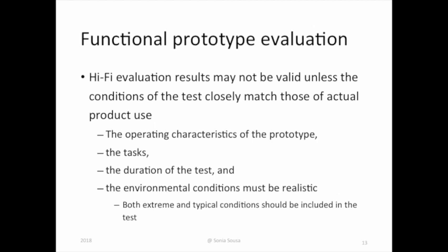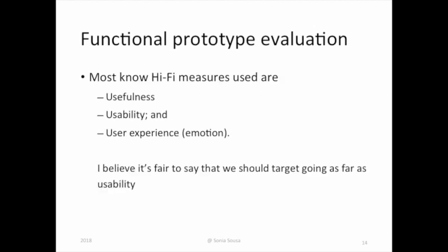How we do the test and the constraints that we have are important to be well defined. Most high fidelity measurements are basically usability metrics. We look for the usefulness of the product, usability — how efficient it is, how effective it is, how satisfactory it is for the user. And we look also for emotions in the user experience: what emotions the user experiences when using a certain product or performing certain activities.